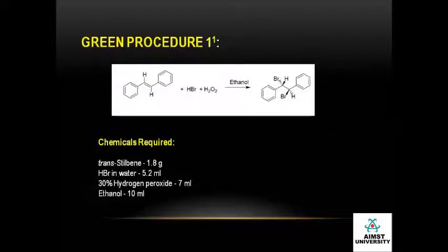Now let us see what is the greener procedure to synthesize trans-bromostilbene. The chemicals required for this are: trans-stilbene, hydrogen bromide in water, hydrogen peroxide, and ethanol.